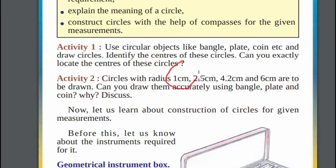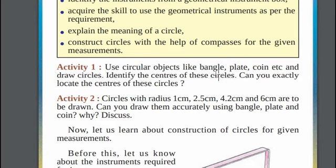We can draw a circle using objects like bangles, food plates, coins and so many other things. But what if we want to draw a circle of radius 1cm, 2.5cm, 4.2cm or any other specific measurement? Using these objects, you cannot draw circles with specific measurements.